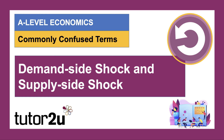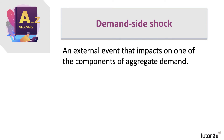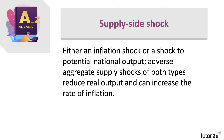Next: demand-side shock versus supply-side shock. There are many external shocks to economies which can affect aggregate demand, aggregate supply, real incomes, jobs, and economic growth. A demand-side shock is an external event that affects one of the main components of aggregate demand — for example, a recession in a major trading partner country might lead to a fall in the value of exports of goods and services sold overseas.